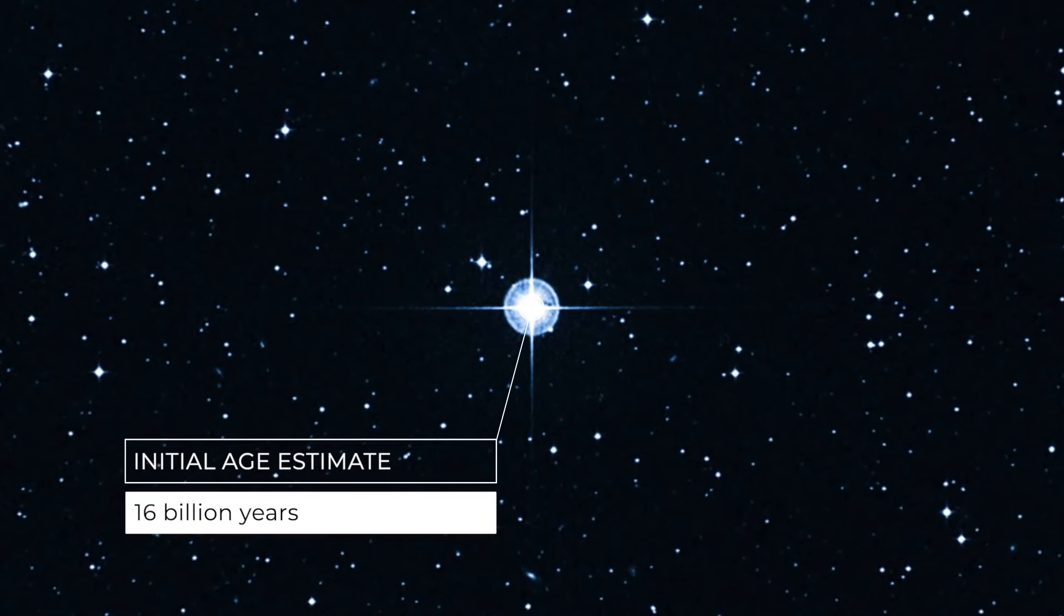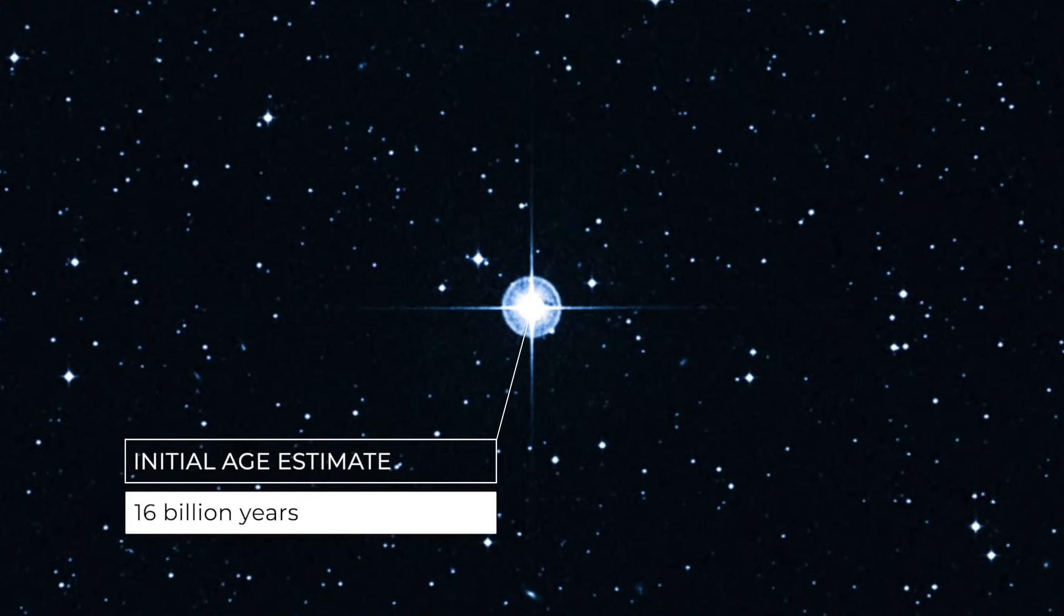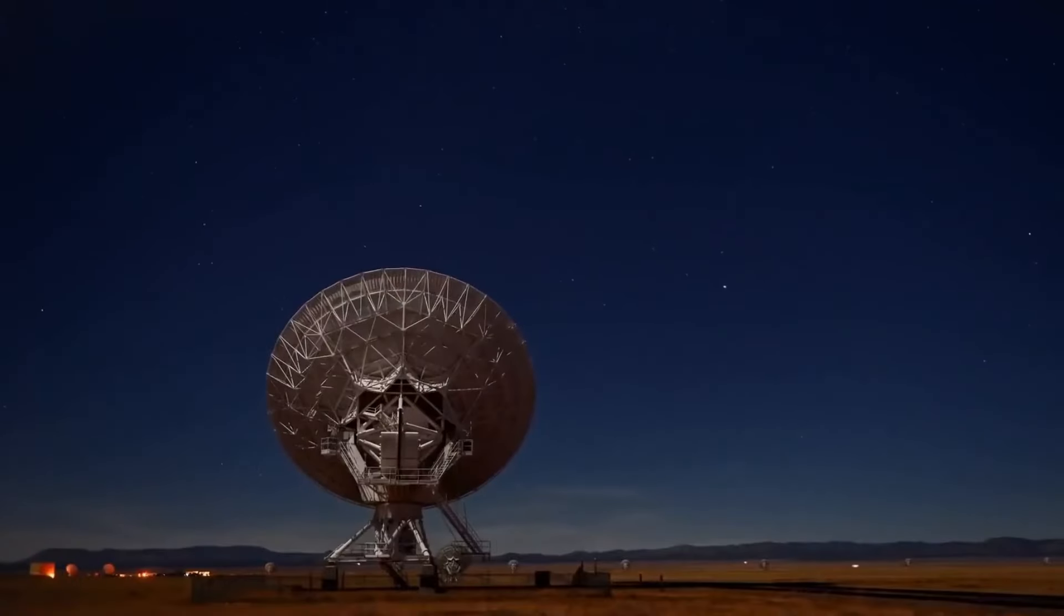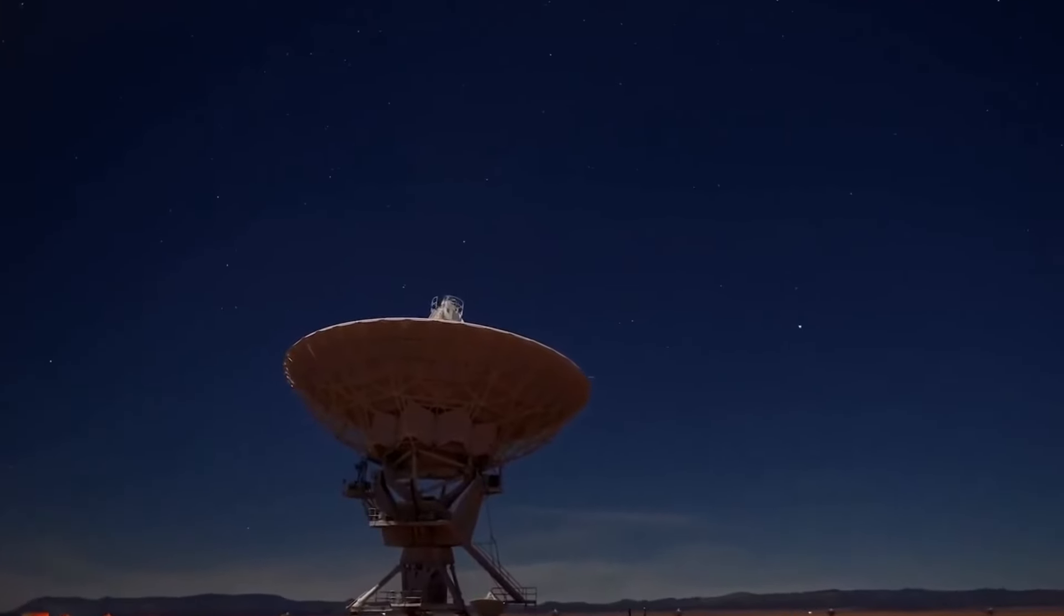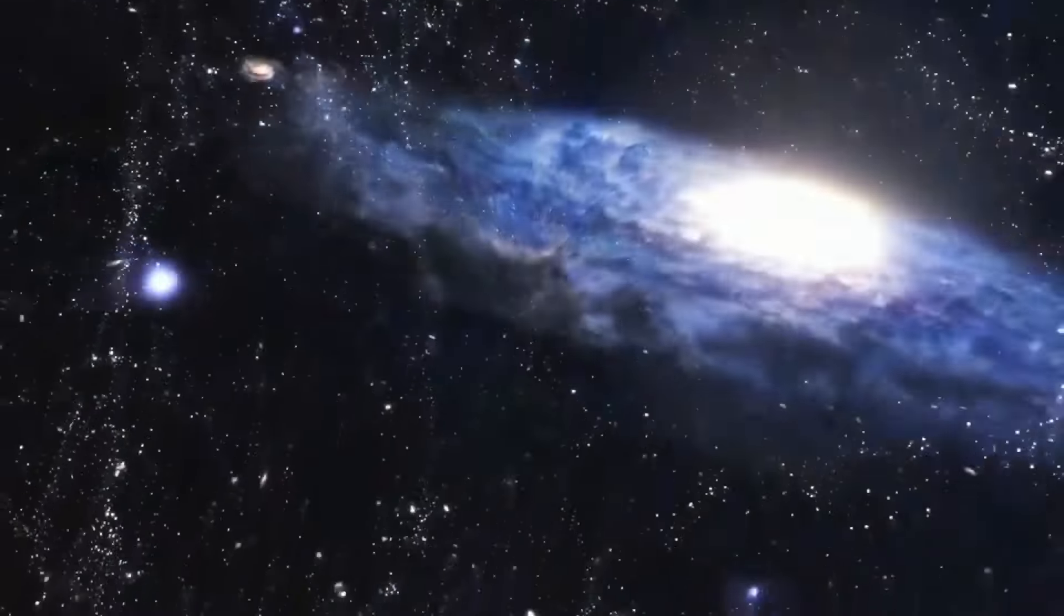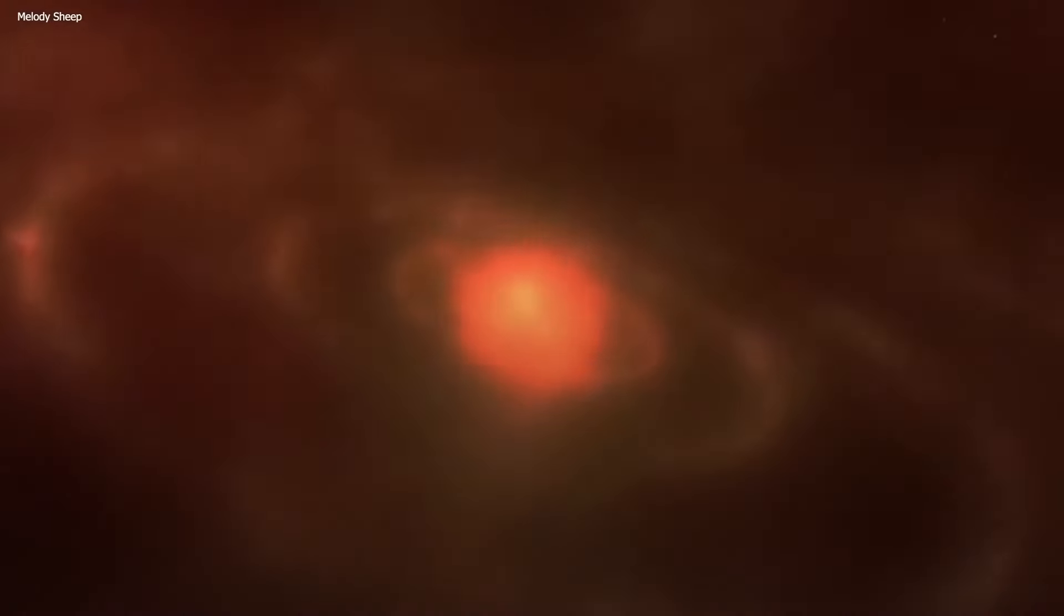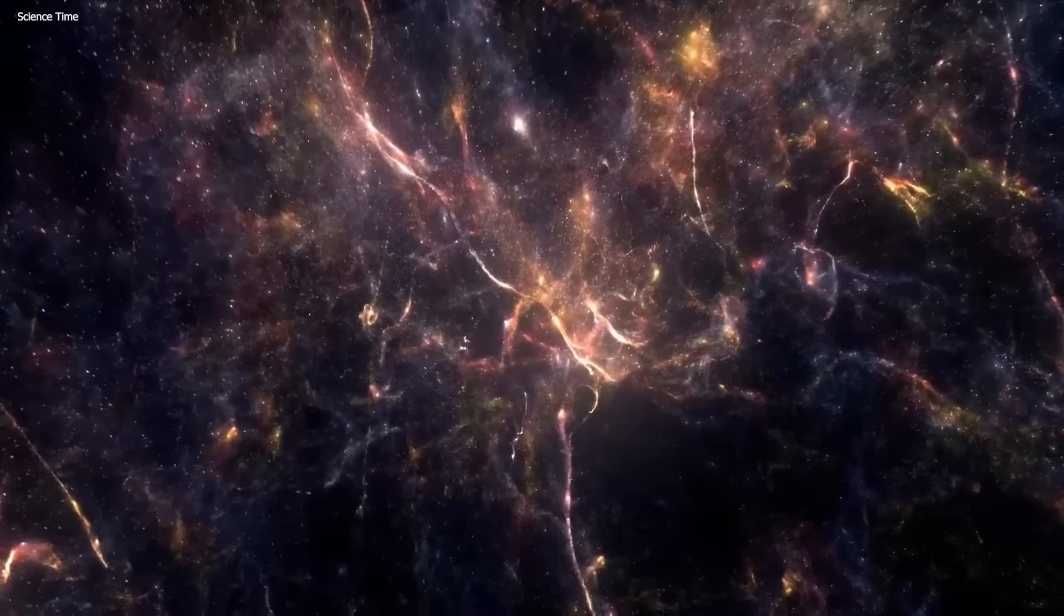The answer to this question is not simply to say that it is a star older than the universe, but also to take into account errors and uncertainties in measurement. Firstly, we need to understand that measuring the age of the universe or the age of stars is not an easy task, all of which rely on some assumptions and models, and these assumptions and models may not be entirely accurate. Secondly, we need to know that the measurement results have a certain margin of error, that is, the actual value can fluctuate within a range, not a fixed number.